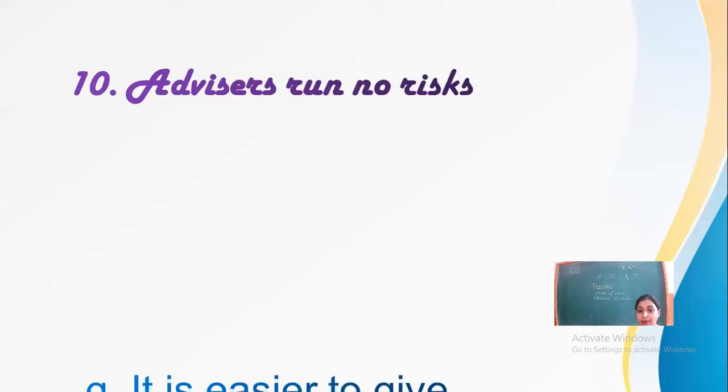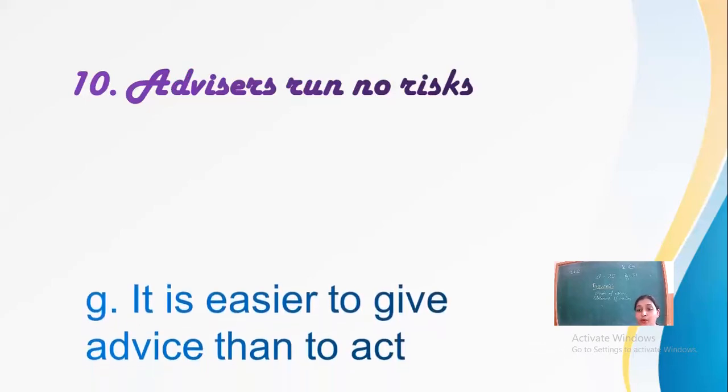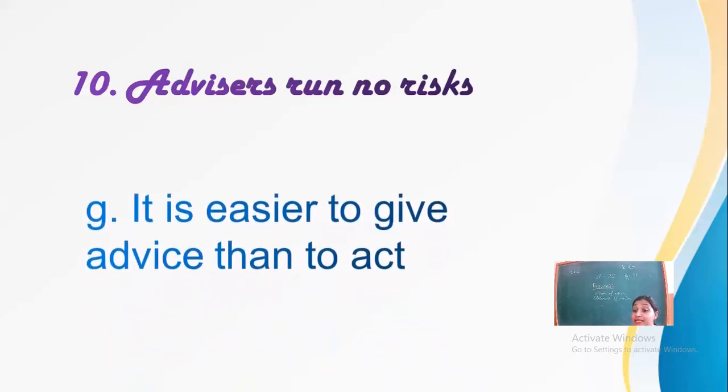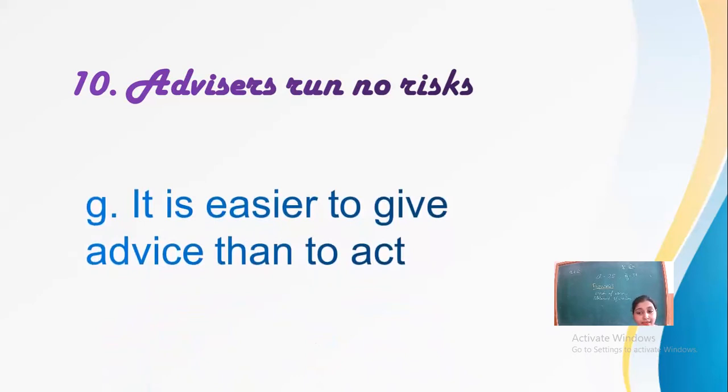But you know what to do. Your friends, your advisors, they don't know anything. They run no risk. Their cycle is not broken. It is easier to give the advice but it is tough to act. You have to face your parents, not your friends. So it is much easier to give advice than to act. It is given at point G.